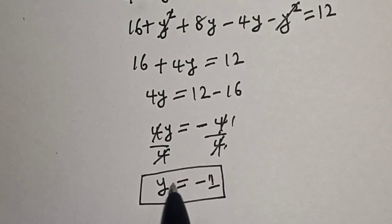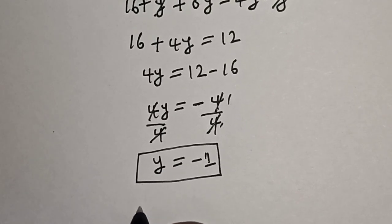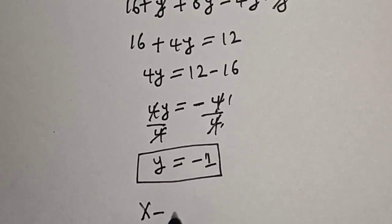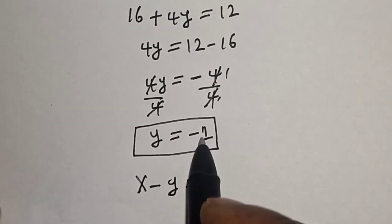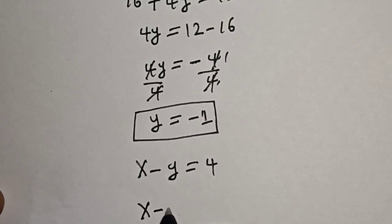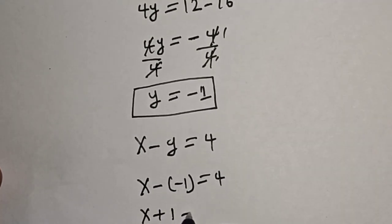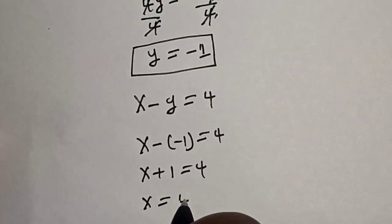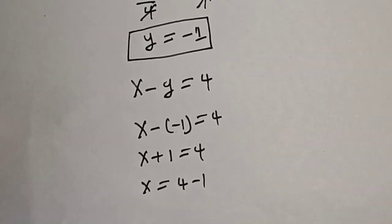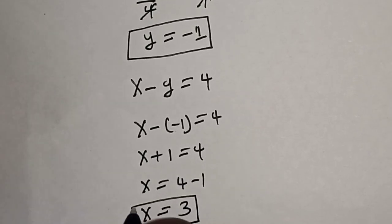In order to get the value of x, let's substitute for y in equation 2. Equation 2 is x minus y is equal to 4. When y is equal to minus 1, we have x minus (minus 1) is equal to 4, which is x plus 1 is equal to 4, so x is equal to 4 minus 1, giving x is equal to 3.